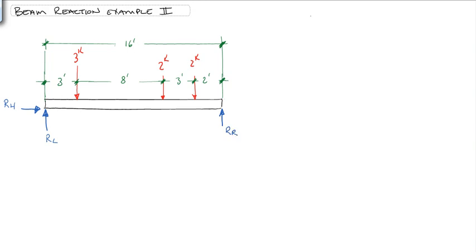Now remember, we'll start off with our three equations of equilibrium. Sum of the forces in the x direction equals 0. Sum of the forces in the y direction equals 0. And the sum of the moments about all points equals 0.